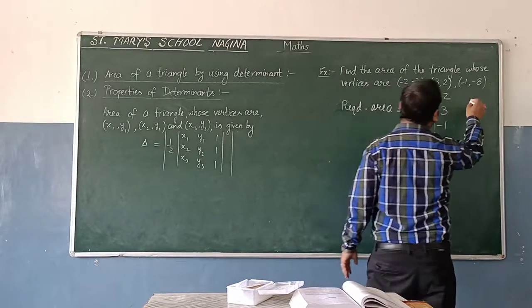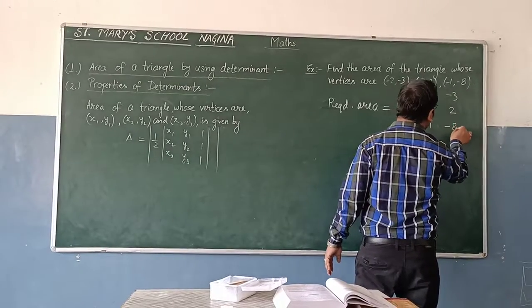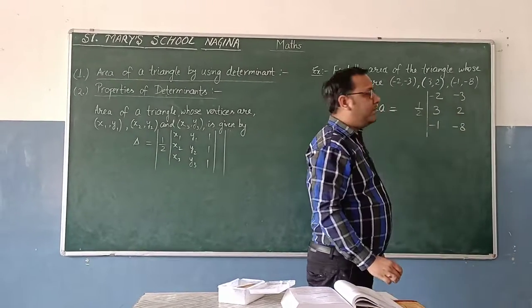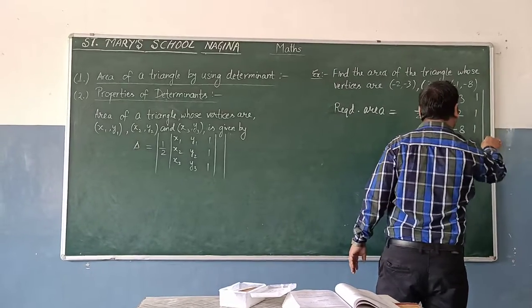Then second coordinate: minus 3, 2, minus 8. And third column, by using 1, you have to make 1, 1, 1. I told you, in this determinant,